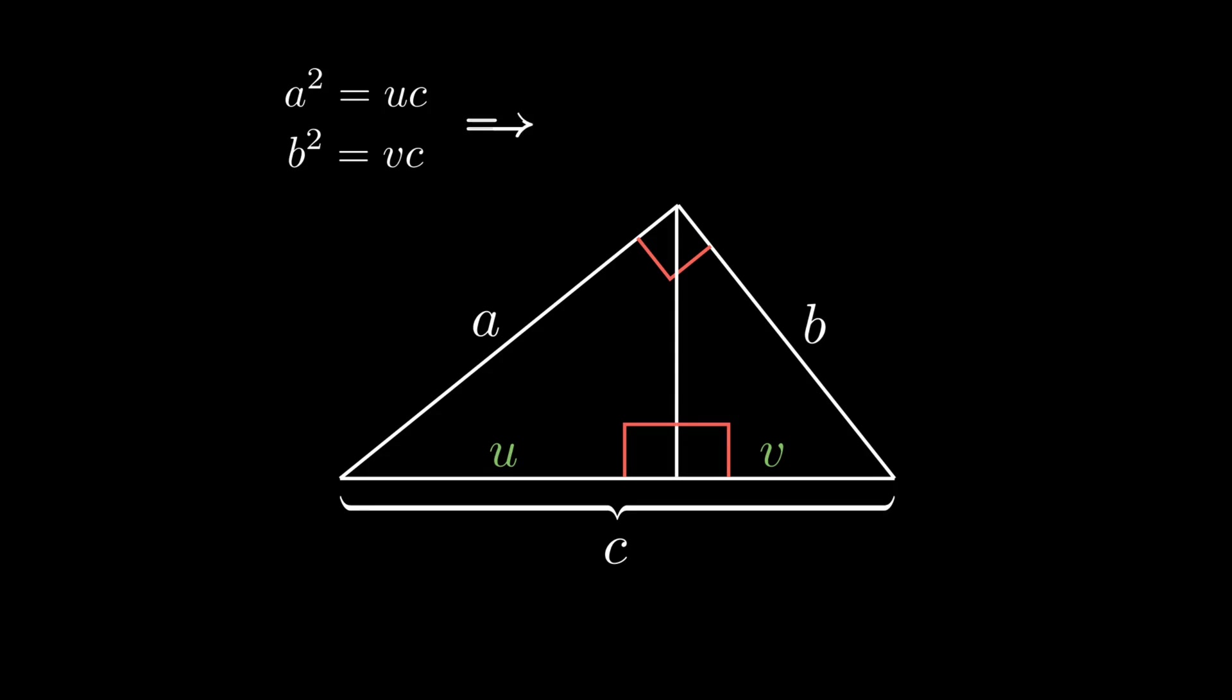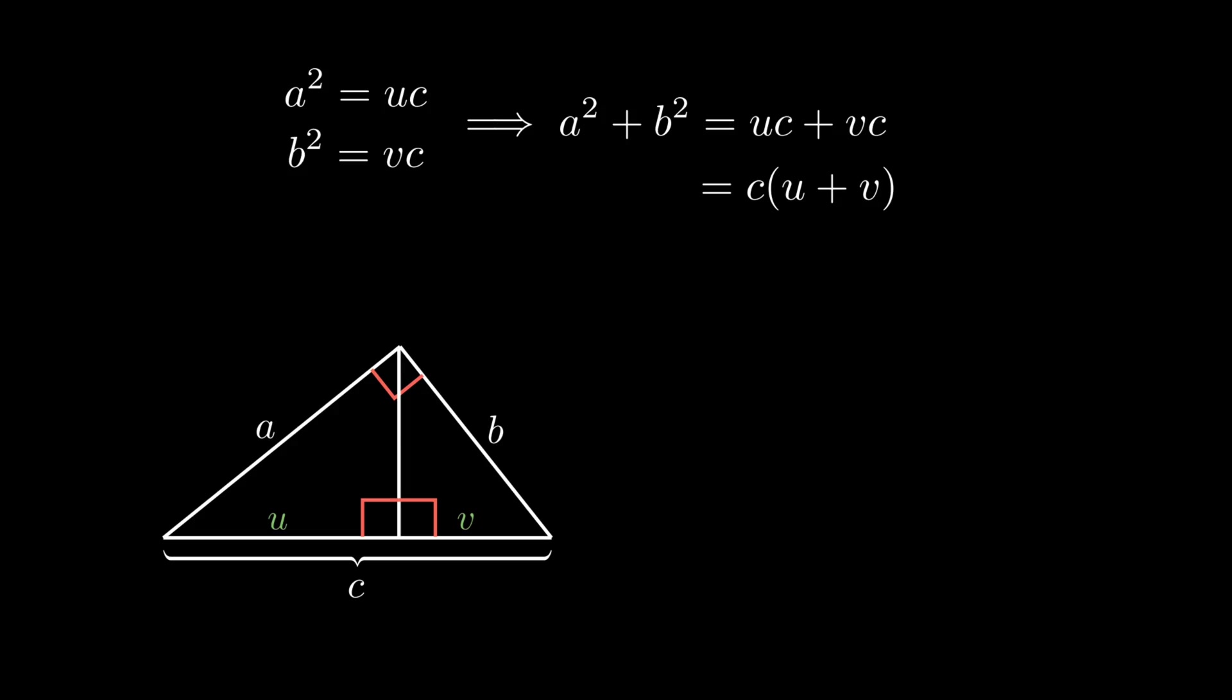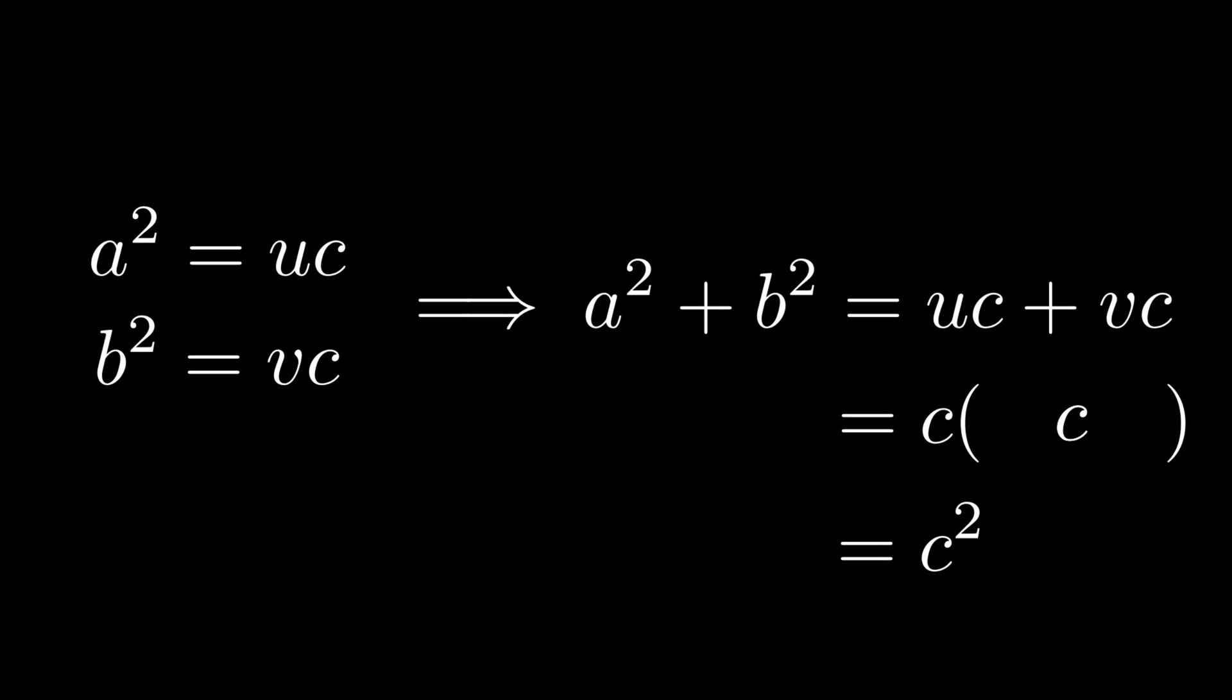Please check these equations if you do not understand at first sight. Adding these two equations results in A squared plus B squared equals UC plus VC. We can factor out C, obtaining C times U plus V. But you can see from the diagram that U plus V is just C. Hence,